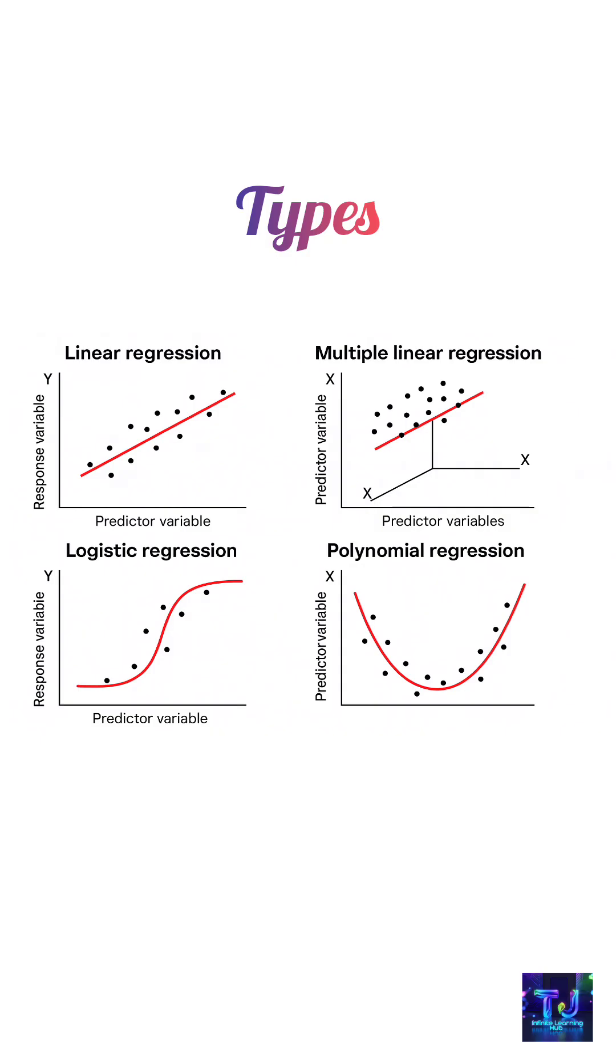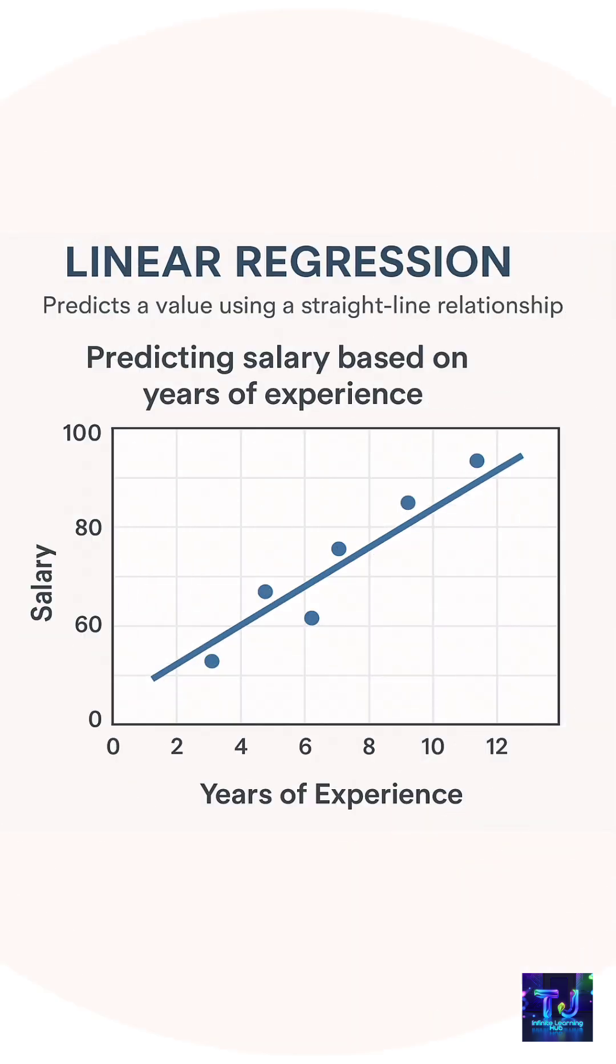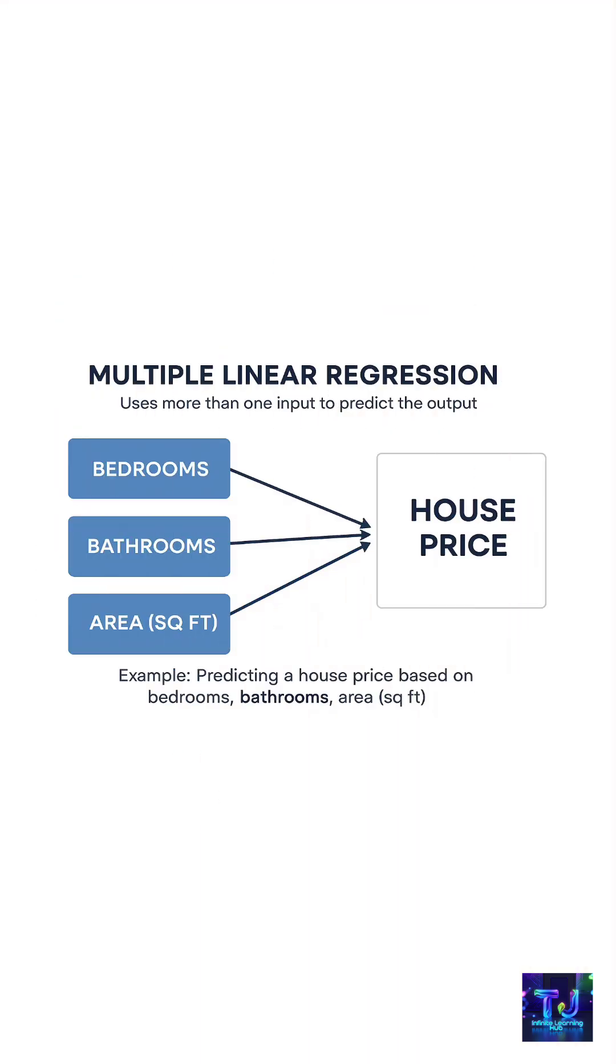Now let's see the types of regressions. There are many types of regressions, but here are the most popular ones. First type is linear regression. It predicts a value using a straight line relationship. We have only one dependent variable as well as only one independent variable. Example: predicting salary based on years of experience.